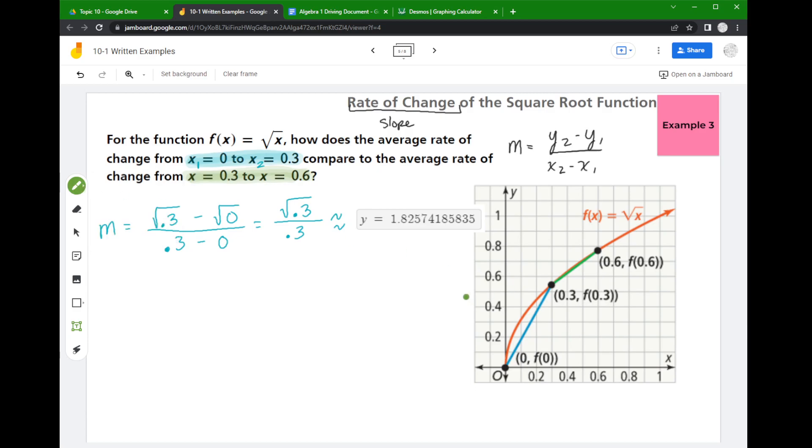So now remember, I have a positive number, so that's a good thing. Now when I go to do my calculation for the green one, I should get something that is smaller than that 1.8-ish.